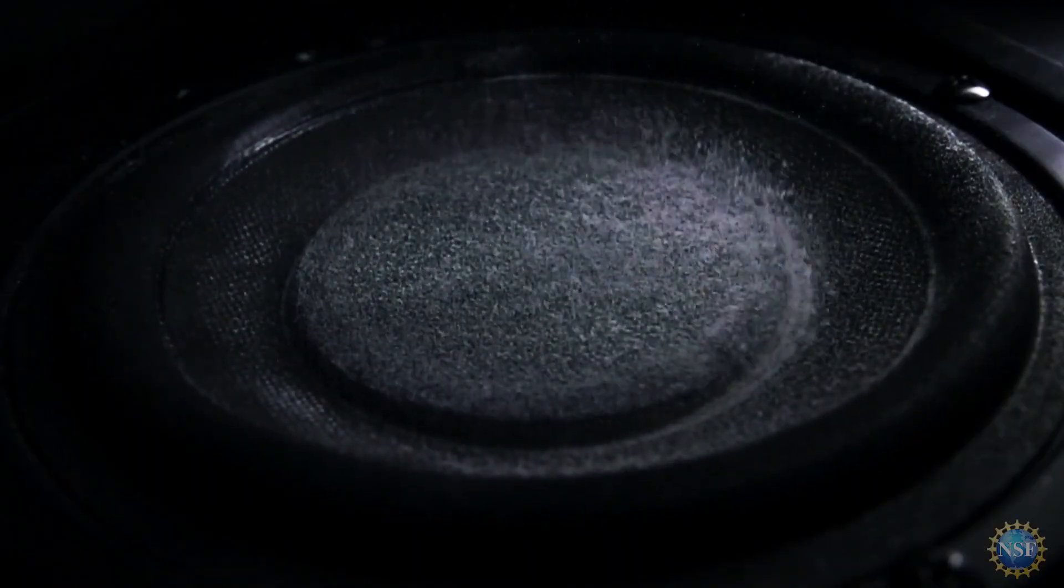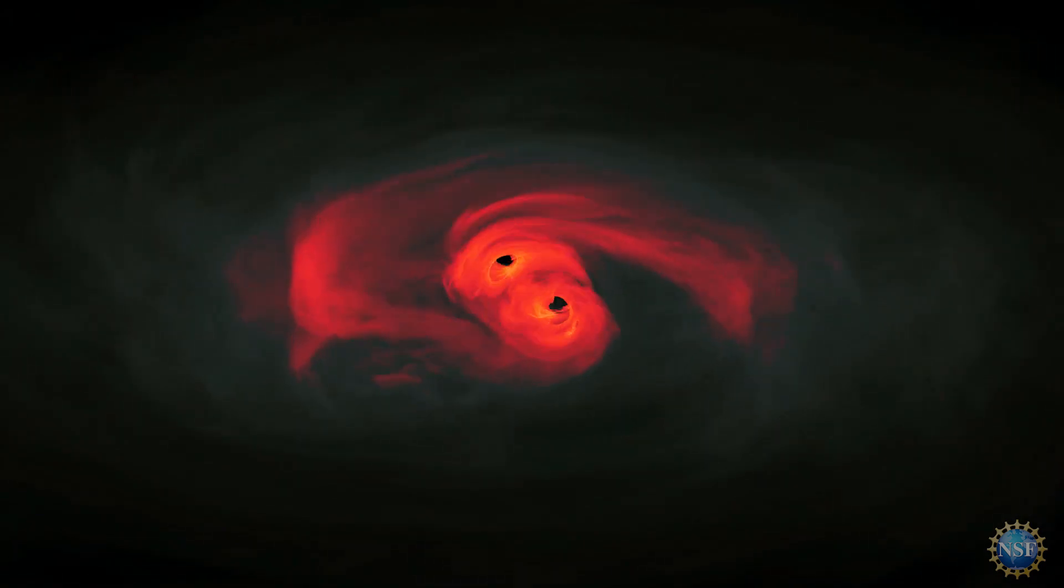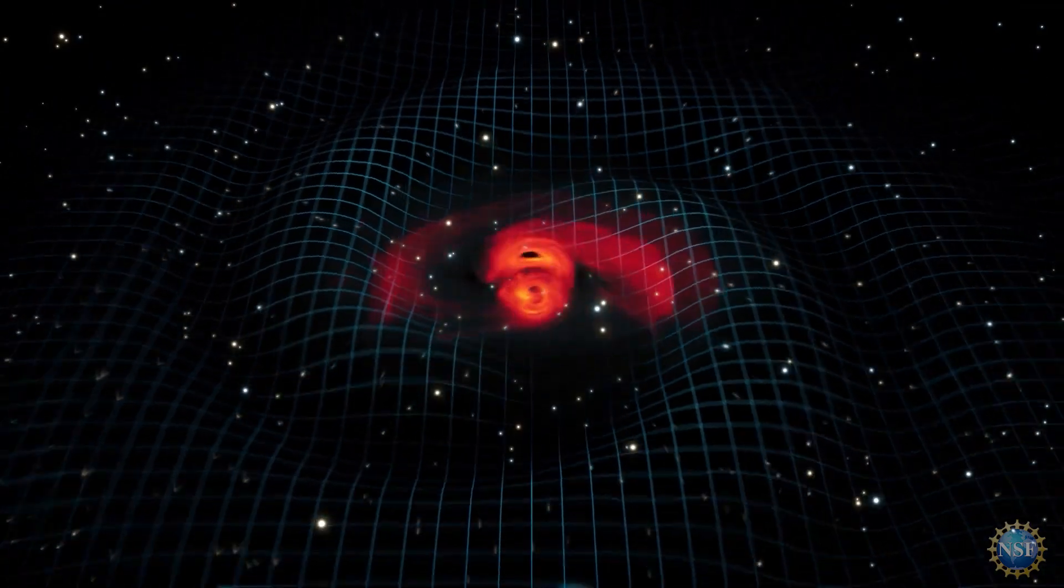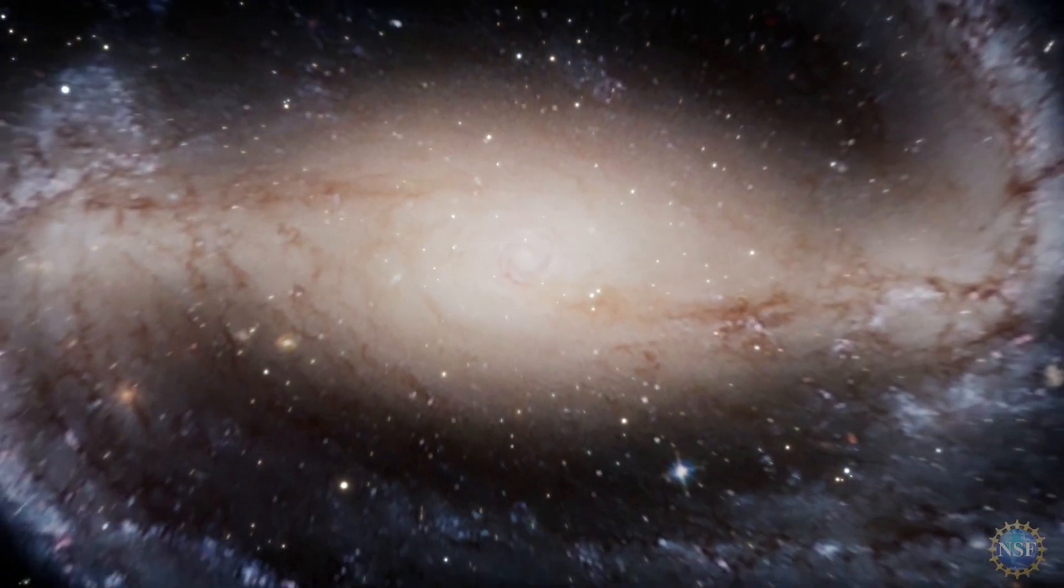Just as sound waves are vibrations of air molecules, gravitational waves are vibrations in the fabric of space-time. When two massive black holes spiral toward each other, they produce gravitational waves that travel through the cosmos at the speed of light.